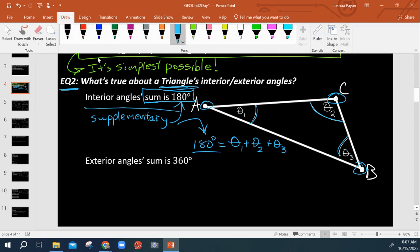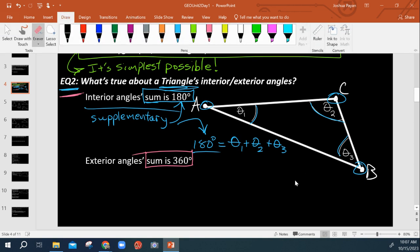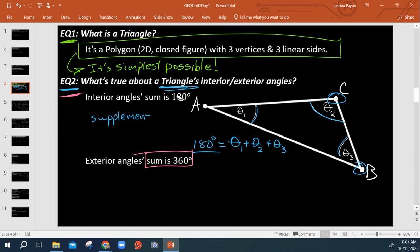So that brings us into the next part. So its exterior angles always have a sum of 360 degrees. So what do I mean by exterior angles, you may be wondering.